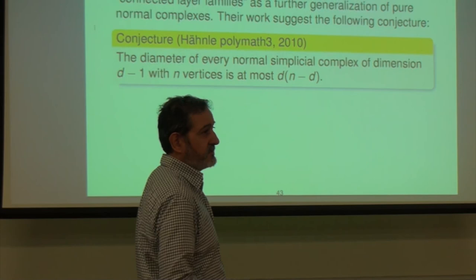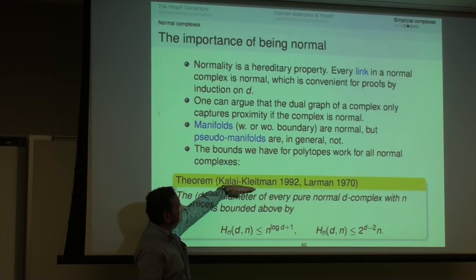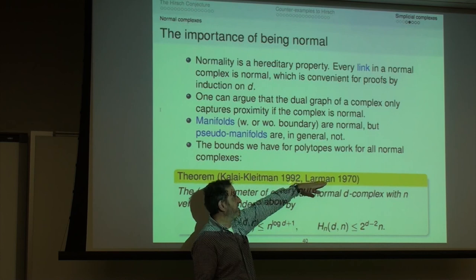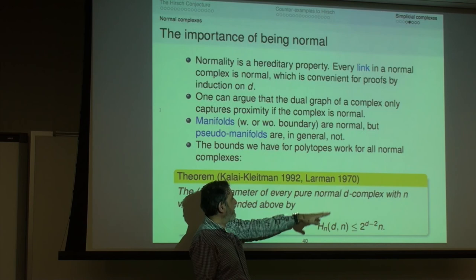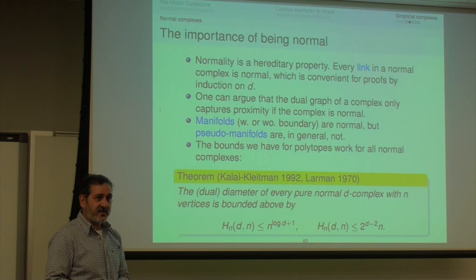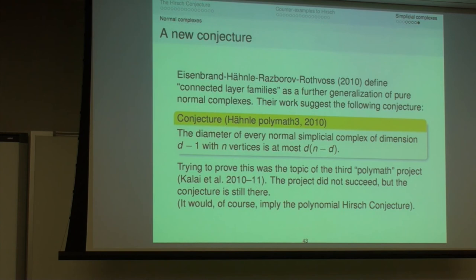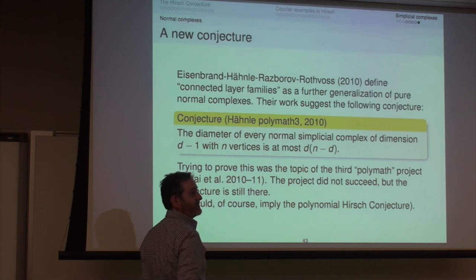For polytopes, we do not know a polynomial upper bound. The two bounds we know — the quasi-polynomial one and the one linear in fixed dimension — are proved so simply that they apply to all normal complexes and all manifolds. That's the best we can do. That's why people are trying to think more combinatorially about normal simplicial complexes rather than polytopes, to see what happens there.